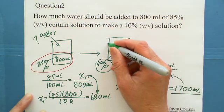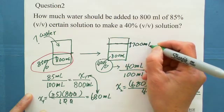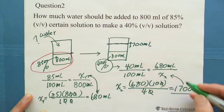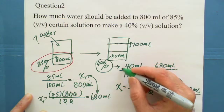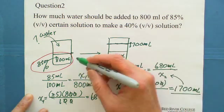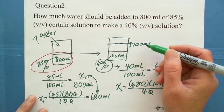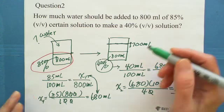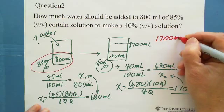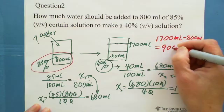After adding water, at this moment, the total is 1700 milliliters. There are 680 milliliters of solute in 1700 solution. The concentration is 40%. Originally we have 800 milliliters solution. Now I have 1700. How many milliliters of water? Just using this one. 1700 milliliters subtract 800 milliliters, we got 900 milliliters.